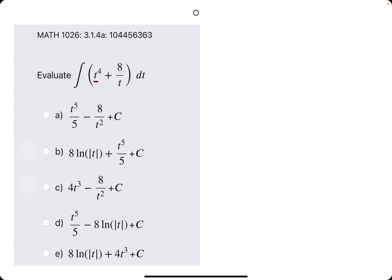First, we will start with t to the fourth. The method in reverse power rule is adding 1 to the exponent. So we get t to the fifth, and then we divide by whatever that new exponent is. And just like that, we've taken care of the t to the fourth.